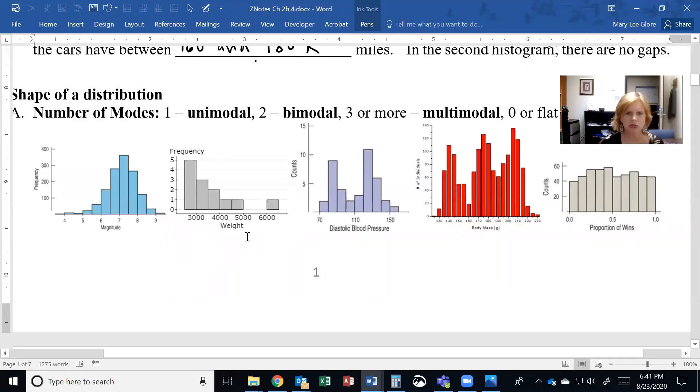What I have here are several histograms for different types of quantitative variables. If you look at these, they all have different shapes. When we have a histogram, a distribution of a quantitative variable, one of the things we can describe is its shape.